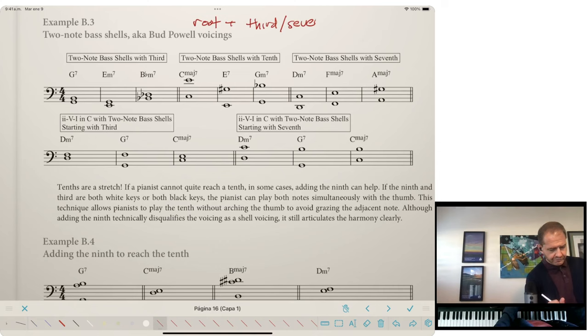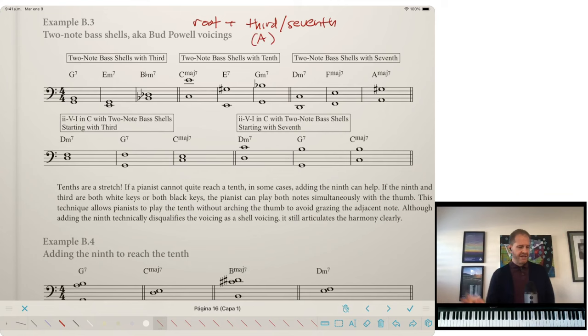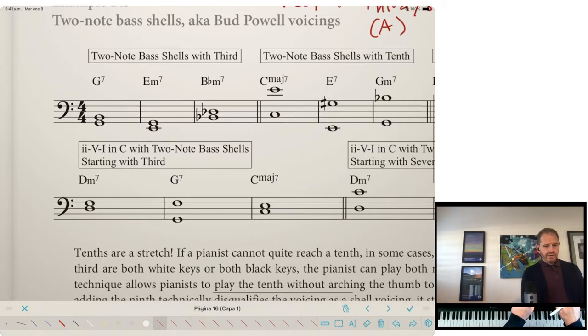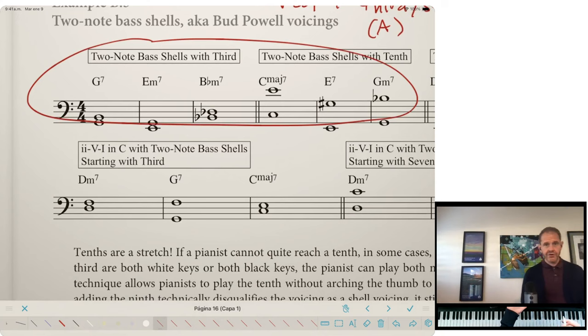You might know from other studies that when you have the third of the voicing lowest, we call that a type A. So these are going to have the root plus the third or the seventh in there. So the type A are here. These have the root plus the third, but notice that there's two different formations you can use. You could either have the third, just literally a third above the root, or you could put that up an octave and play the third a tenth above the root.